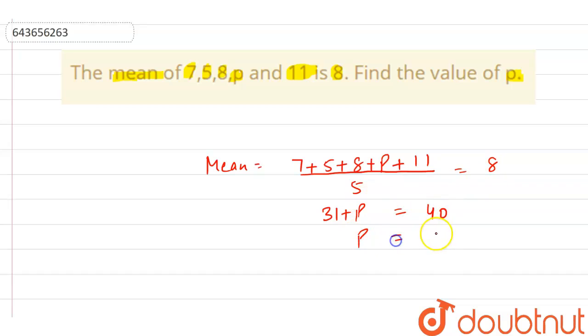So from here we can say that p is equals to 40 minus 31 which is equals to 9. So hence we can say that this is our final answer. As the question says to find the value of p, so we can say that the value of p is 9.